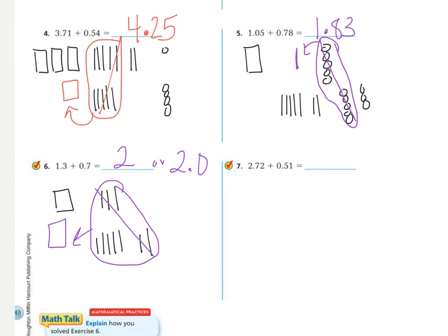And number 7. Drawing my picture. Again, lining them up. Starting with the hundredths. I have less than 10. So, I leave those alone. In the tenths, I have more than 10. So, I'm going to circle 10 of them. Cross them out. Make a new one. And then rewrite as digits. I have 3 ones. And 2 tenths. And 3 hundredths. So, 3 and 23 hundredths.